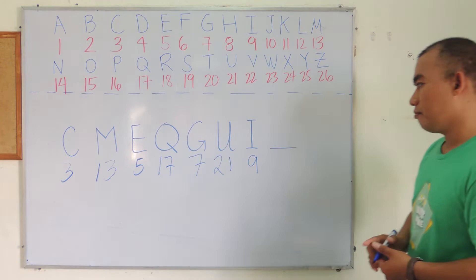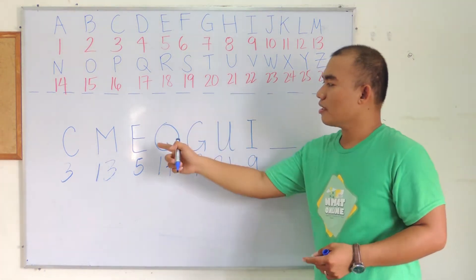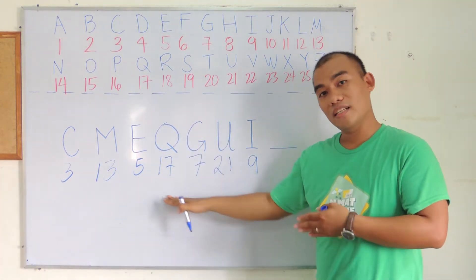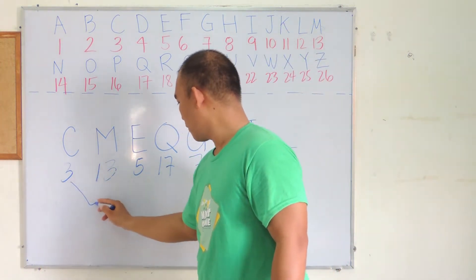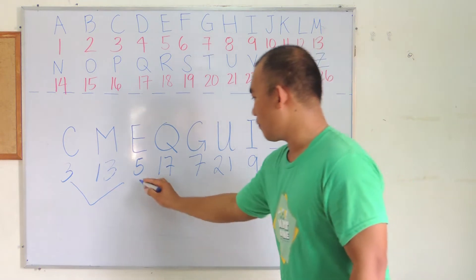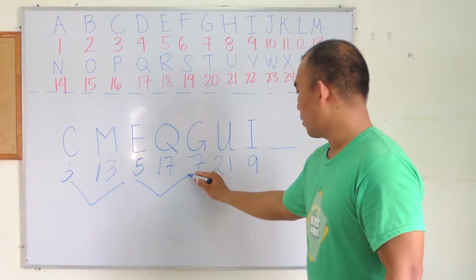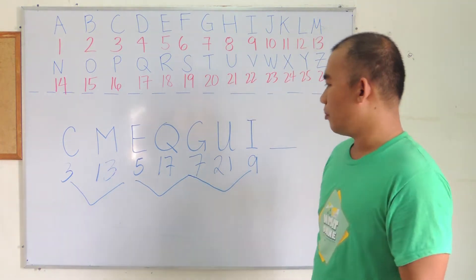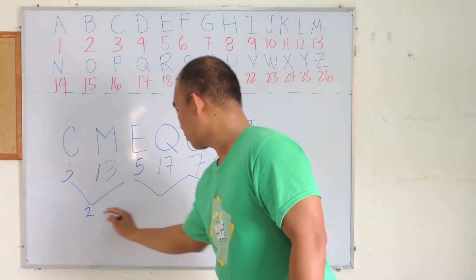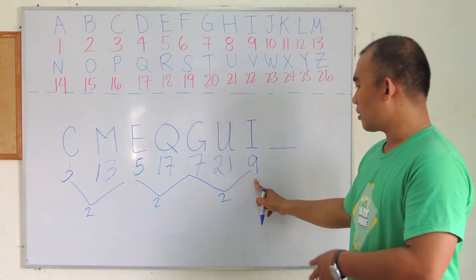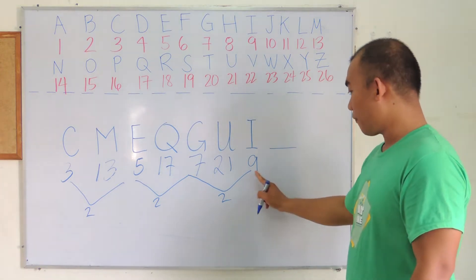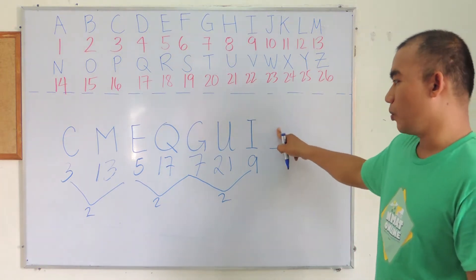We're going to deal with the letter series now as a number series. I think we have a pattern here: 3, 5, 7, which is plus 2. But we are going to use this to determine the answer, which will be the next letter after the unknown.